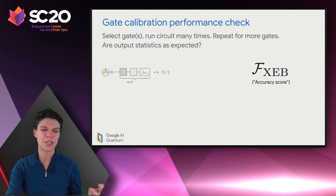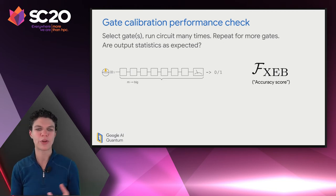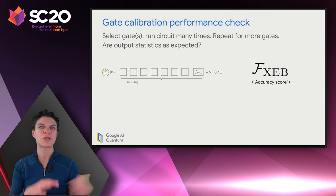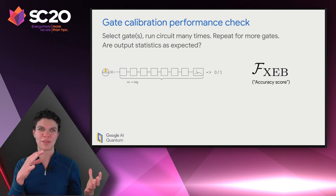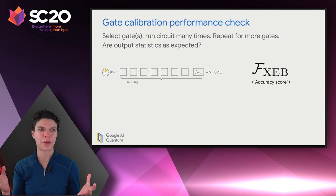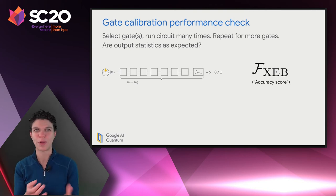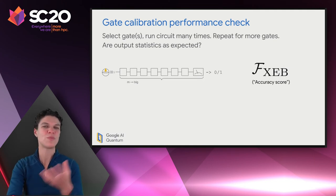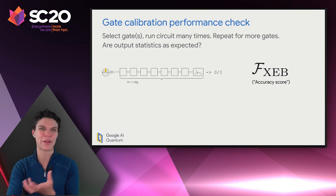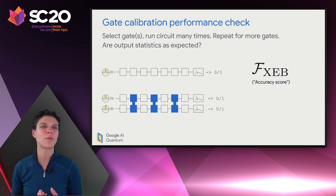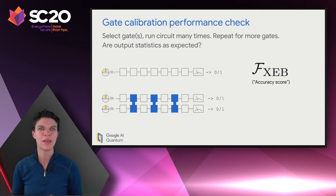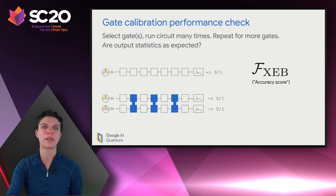We can start by running a gate, measuring the output, and seeing what the answer is. We can only ever measure 0 or 1, so we'll perform ensemble measurements many times and see how well the output statistics correspond to the gate we were trying to create. We can evaluate an accuracy score — we call it FXEB, a fidelity of the gate we were trying to produce. We can add a second gate, a third gate, and so on, increasing the number of gates to learn how accurate we can make them individually. Eventually the fidelity will start dropping off because we'll be running out of coherence time. The same protocol works for two-qubit gates as well.